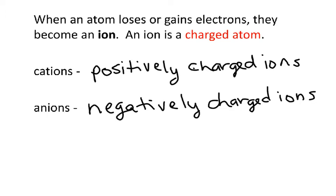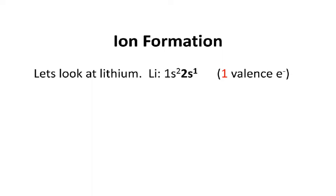There's a really good way to remember this: cats are positively perfect. Or you can look at the word cation — cat has a T in it, and T looks like a plus sign. However you want to figure it out, make sure that you know how to remember it.